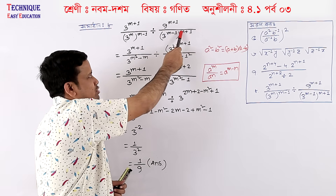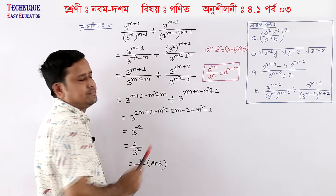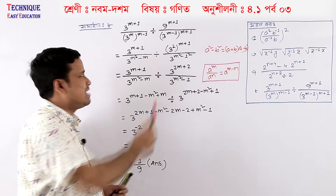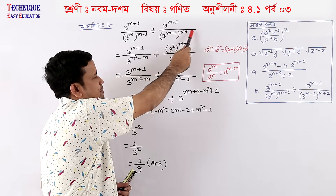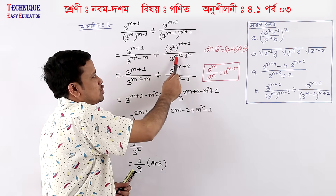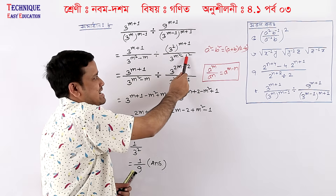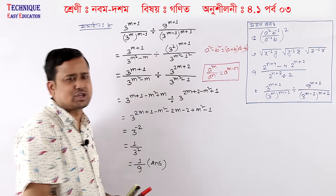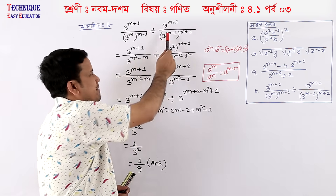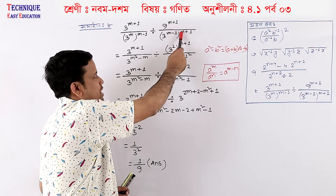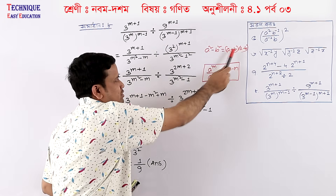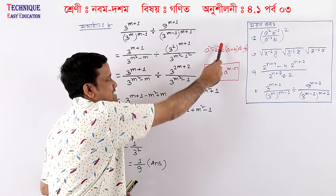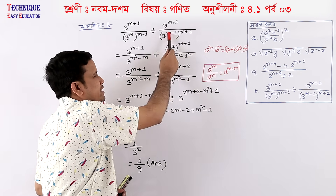Why is this a minus b into a plus b? We will say a minus b into a plus b, so that's a squared minus b squared. a minus b into a plus b gives a squared minus b squared.